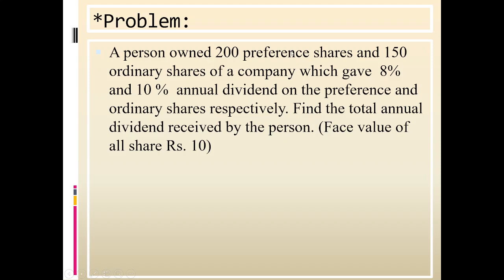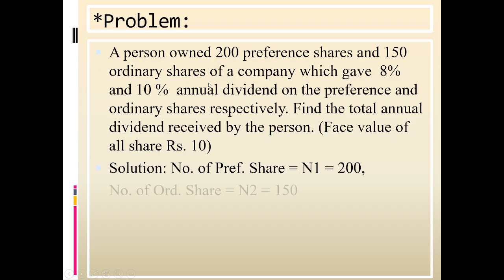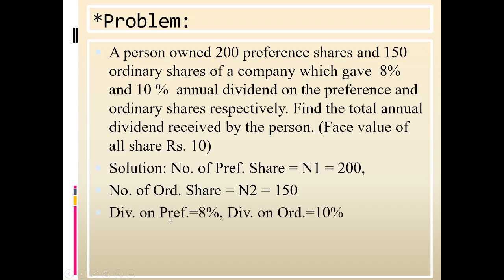Next problem: a person owned 250 preference shares — so n1 = 250 — and 150 ordinary shares — so n2 = 150. The company gave 8% annual dividend on preference shares and 10% annual dividend on ordinary shares.